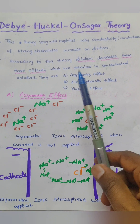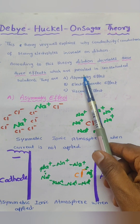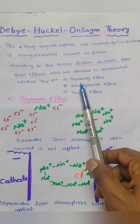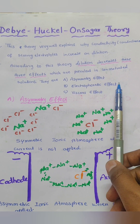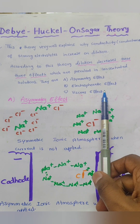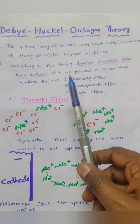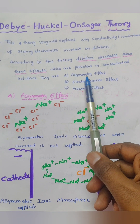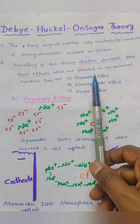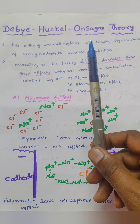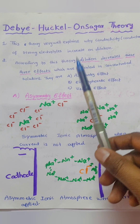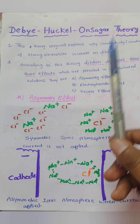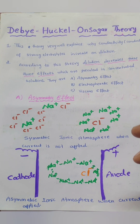In the concentrated solution, three types of effects are present: one is the asymmetric effect, second is the electrophoretic effect, and third is the viscous effect. Upon dilution — that means on addition of solvent — these three effects decrease. As a result, the molar mobility of the ions increases, and as a result the conductance, that means the lambda M value, increases.